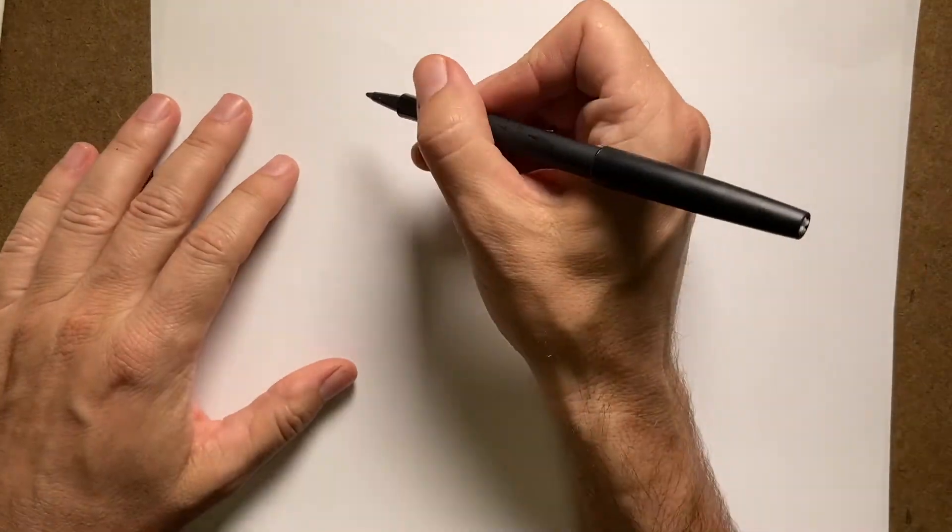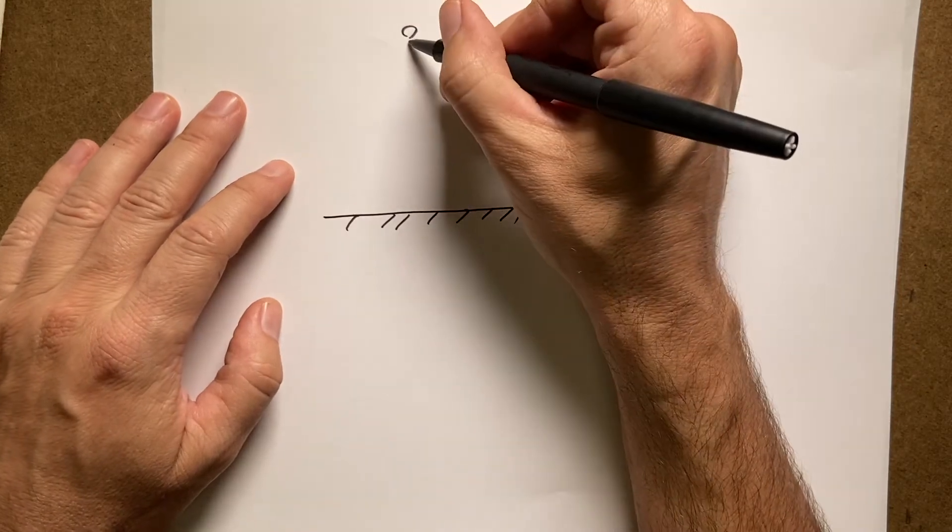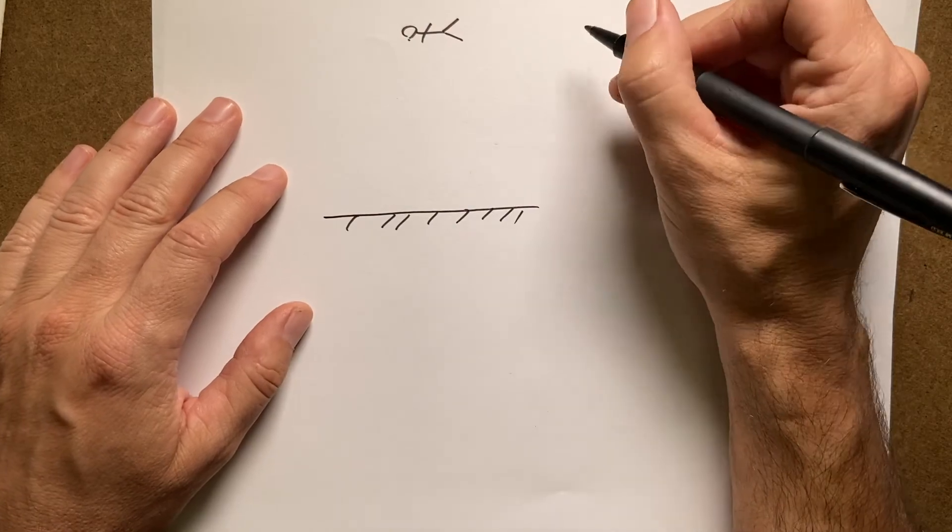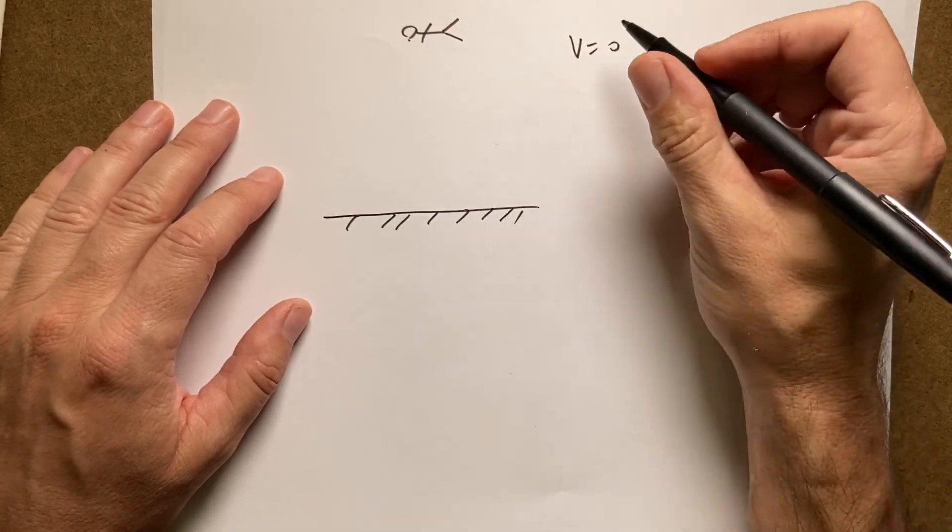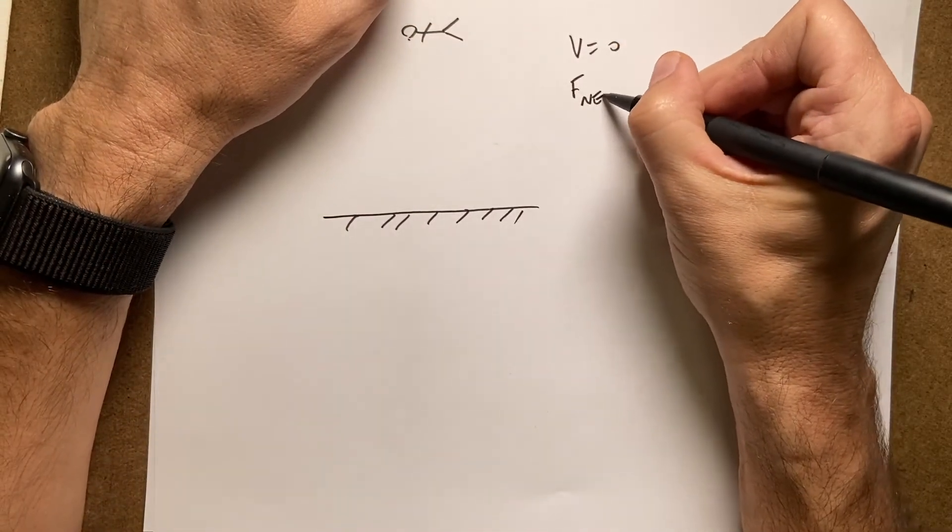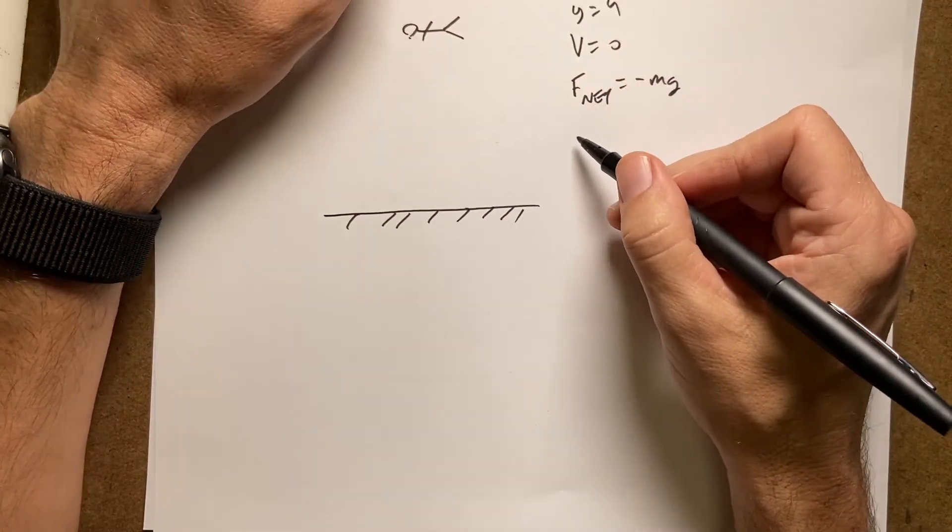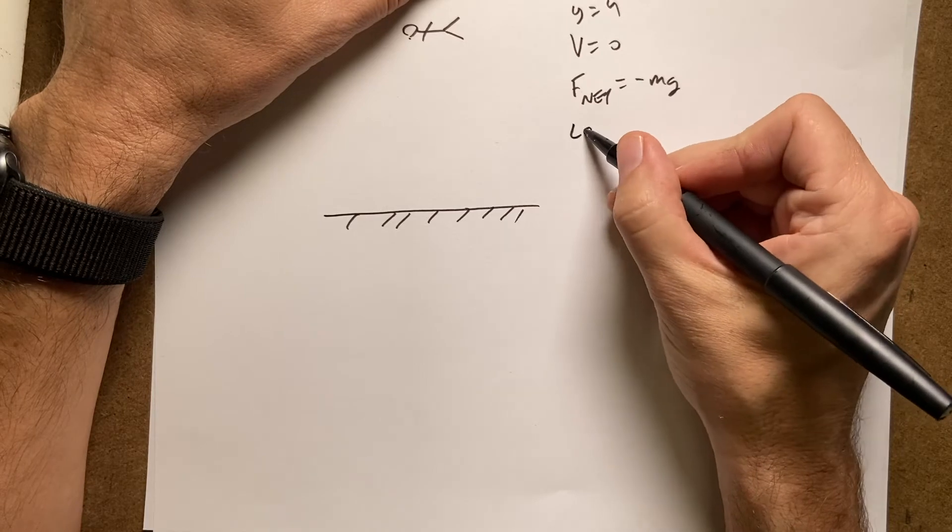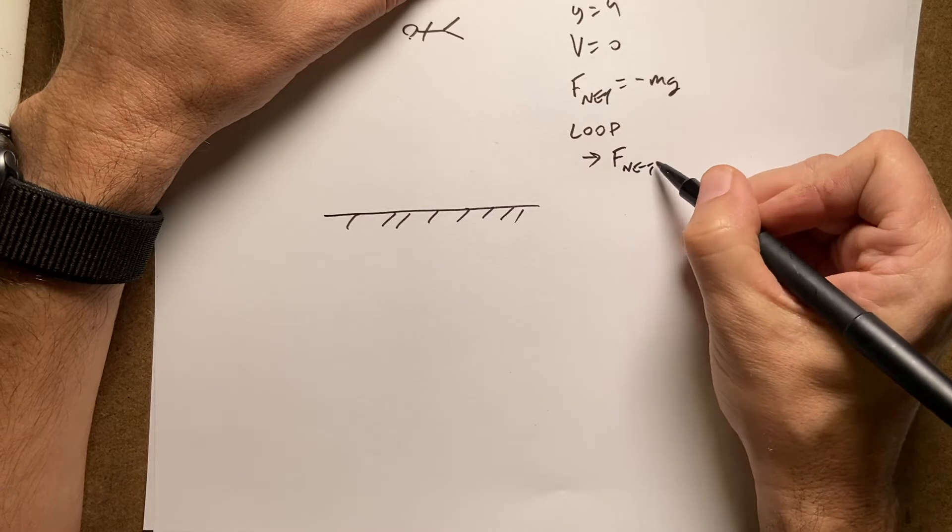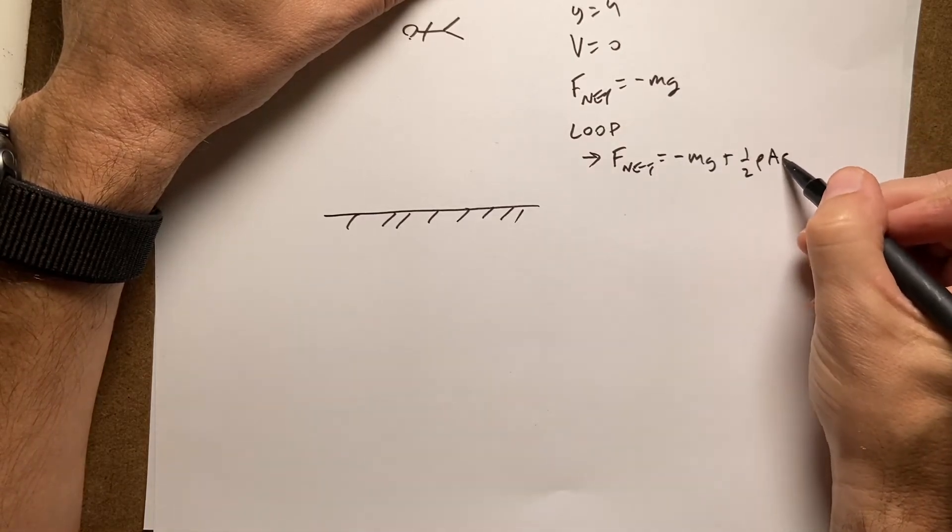So then how do I get the height? Well, what I'm going to do is the following. I'm going to start with the skydiver up here. I'm going to start with some initial conditions. Velocity equals zero. And this is just one dimension. I can calculate the net force. It would just be negative mg. I know the y is equal to h. And then what I'm going to do is make a loop. And in that loop, the first thing I'm going to do is calculate the force. F net equals negative mg plus 1.2 rho AC v squared.